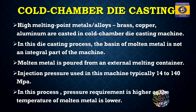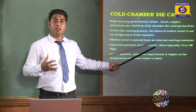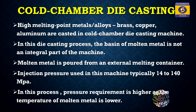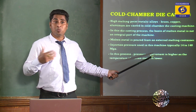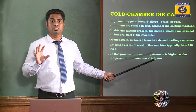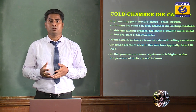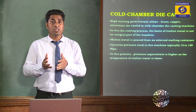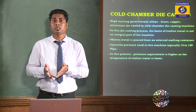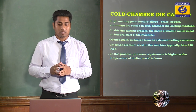Molten metal is poured from an external melting container because the melting unit is not an integral part of this machine. The pressure used in this process is around 14 to 140 MPa. The pressure requirement is higher in Cold Chamber compared to Hot Chamber Die Casting Process, because the temperature of the molten metal is lower in this process.